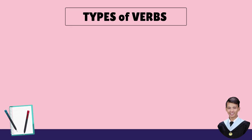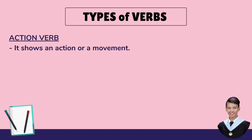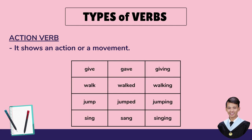There are three types of verbs. Let's begin with the first one: the action verb. Action verb shows an action or a movement. Examples: give, gave, giving; walk, walked, walking; jump, jumped, jumping; sing, sang, singing. Remember that all words that show movement or action are action verbs.